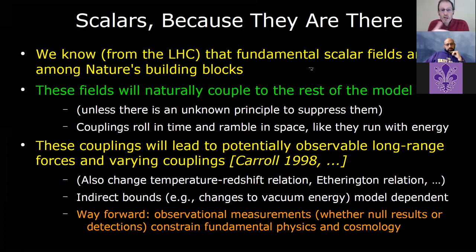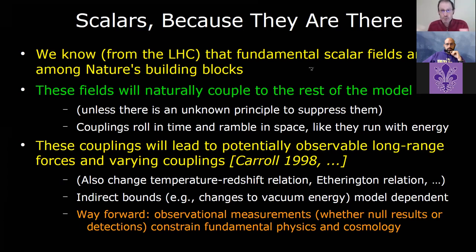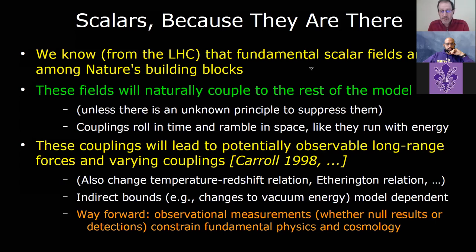I don't have time to discuss all of these, but just to point to a couple. If you have a varying fine-structure constant, for example, you will violate the usual temperature-redshift relation, and will also violate the distance duality relations. There are also things like indirect bounds — if these couplings do vary, you could think of very strong changes to the value of vacuum energy, and these would be tightly constrained. But given that we don't really seem to understand the value of the cosmological constant, these bounds, apart from being indirect, should be taken with a substantial amount of salt.